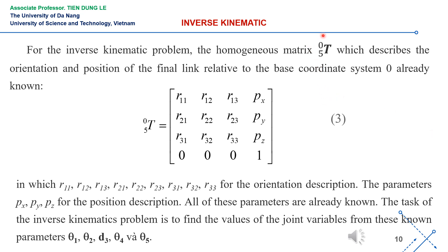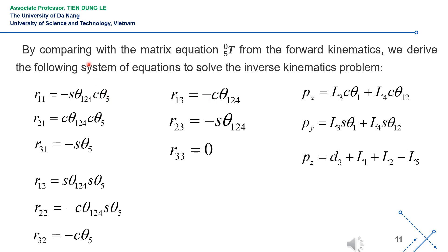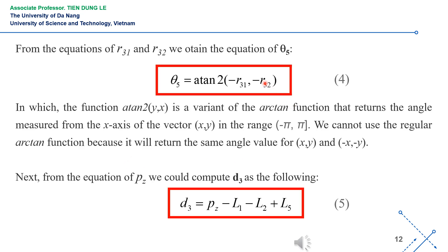In this case, all the components R and P inside the matrix are already known and specified. By comparing with the matrix equation 2 from the forward kinematics to equation 3, we derive the following system of equations to solve the inverse kinematics problem. From the equations of R31 and R32 we obtain equation 4 for theta 5.